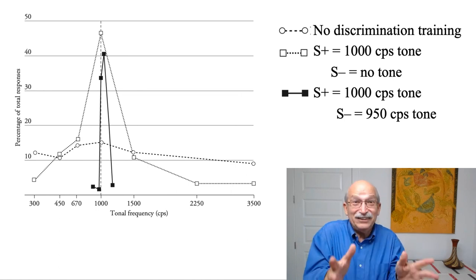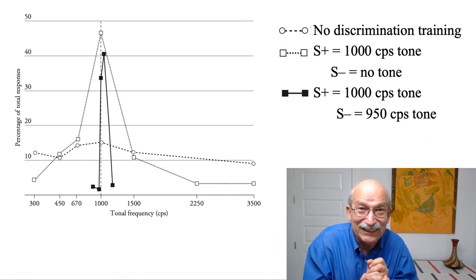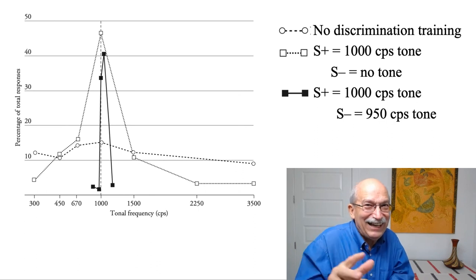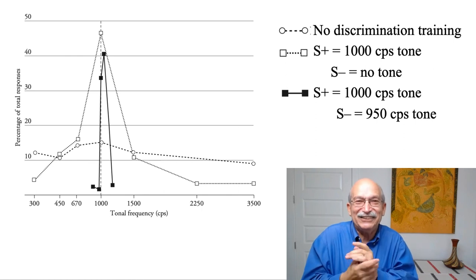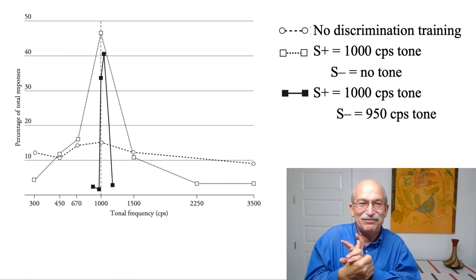What does this mean for you in daily life? You are not a pigeon. The conclusion is that discrimination training is really the basis for the development of expertise in virtually any area. What those pigeons learned is that they became real experts in tonal frequency. If you want to become an expert in something, you have to undergo highly precise discrimination training in the domain where you're gaining that expertise.